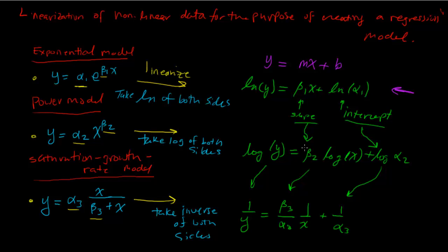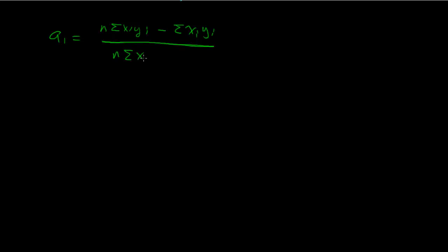And so once the models are linearized, we can do regression, and from before, we know that a1 is equal to n times the sum of xi yi minus the sum of xi yi over n times the sum of xi squared minus the sum of xi squared, and a0 is y bar minus a1 x bar, where x and y bar are the averages of both of those.